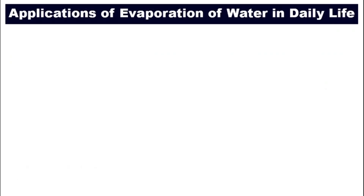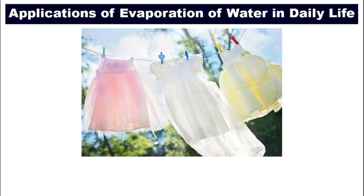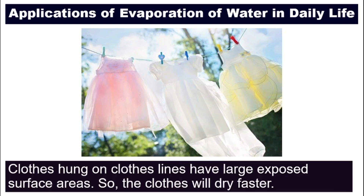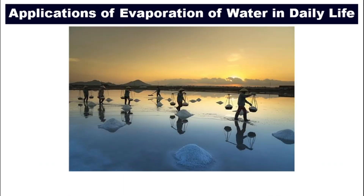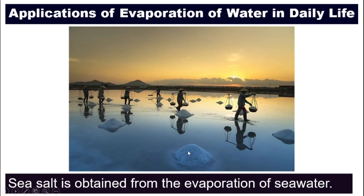Now we have learned about evaporation, the rate of evaporation, and the factors that affect them. What are some applications? Number one, hanging out laundry — we make sure clothes have a large exposed surface area on the lines so they dry faster. Secondly, the making of sea salt — sea salt is obtained from the evaporation of sea water.